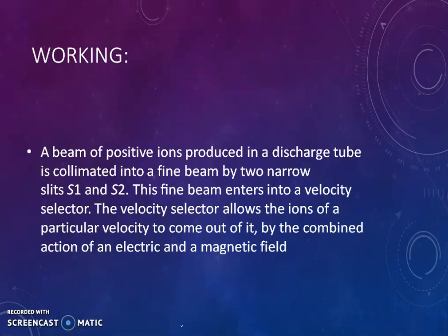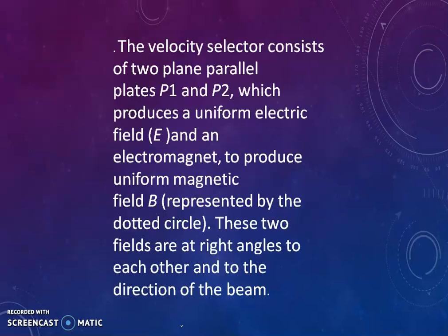Now working of the Bainbridge mass spectrograph. Here, a beam of positive ions produced in a discharge tube and is collimated into a fine beam by two narrow slits S1 and S2. This fine beam enters into a velocity selector. The velocity selector allows the ions to a particular velocity to come out of it by the combined action of electric field as well as magnetic field.